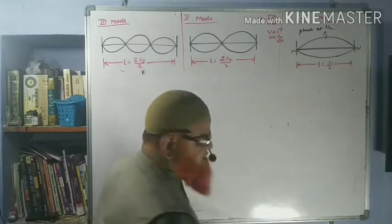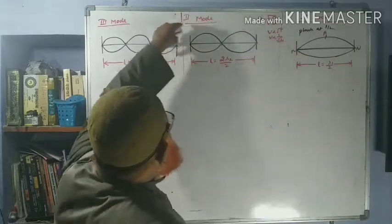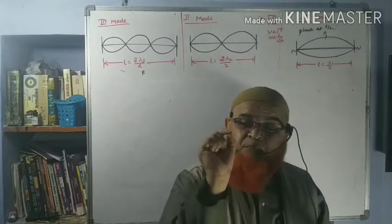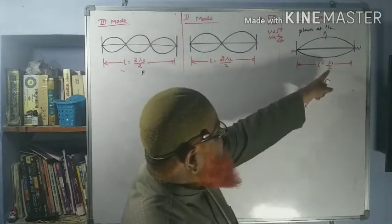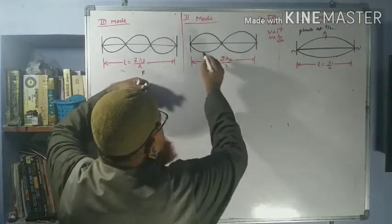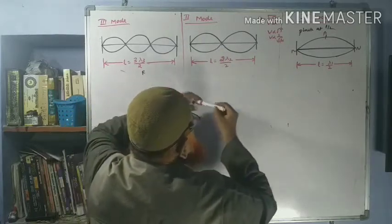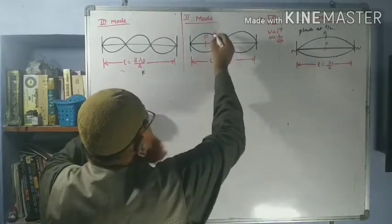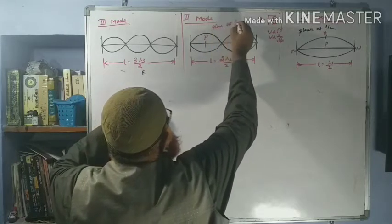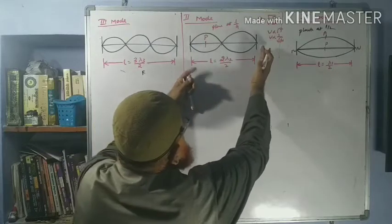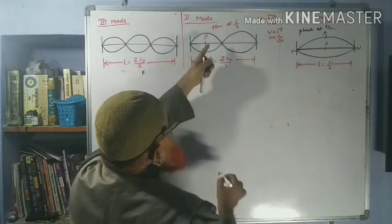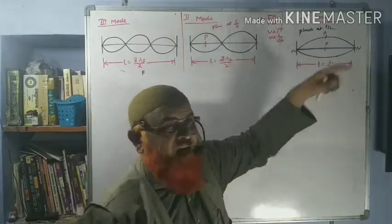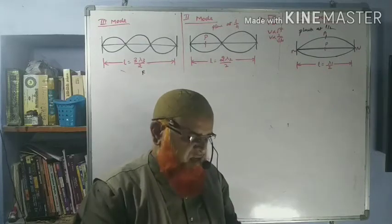There are three modes of vibration. The string length is the same in all cases, but the plucking point is different. In the first mode, you pluck at L by 2, getting one loop. In the second mode, you pluck at L by 4, getting two loops. In the third mode, you pluck at exactly L by 6, getting three loops.